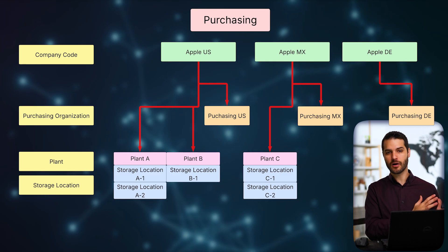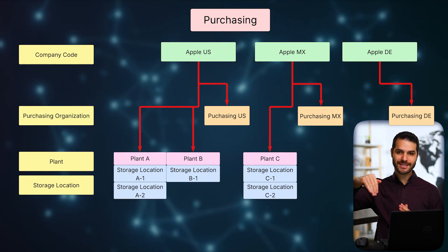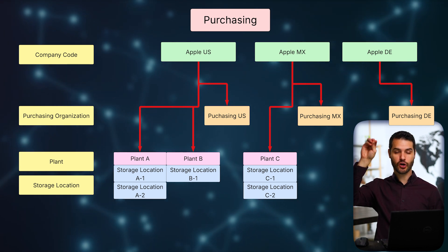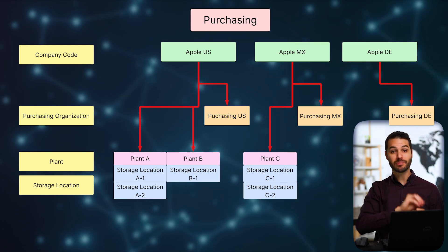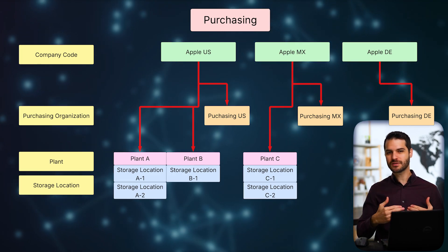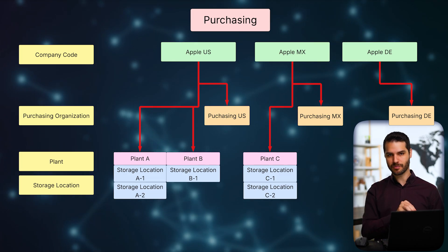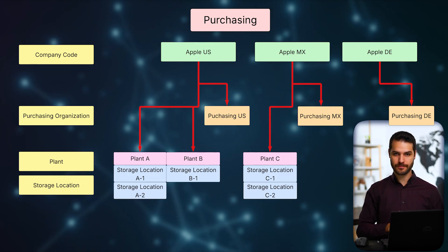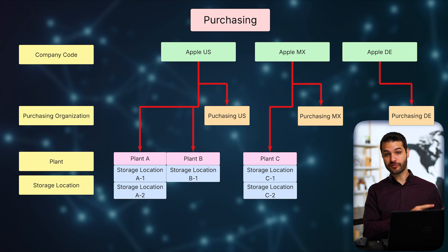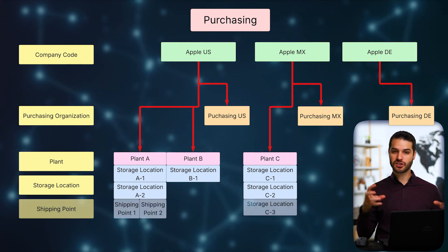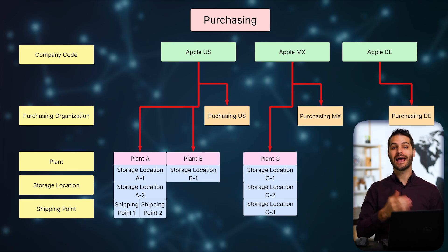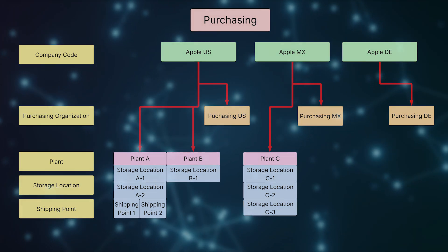One important architectural note: unlike the sales side where the hierarchy goes straight down, on the purchasing side company code links to both purchasing organization and plant — but plants are tied directly to the company code. Think of it as company code directly down to plant, and plants then have storage locations beneath them. The final element under plant is shipping points, where the sales end sends goods out to customers and clients.